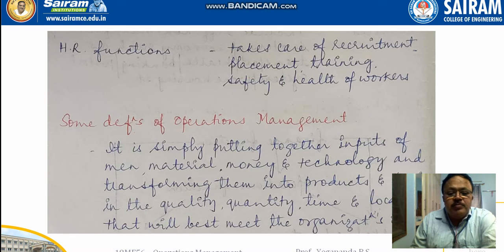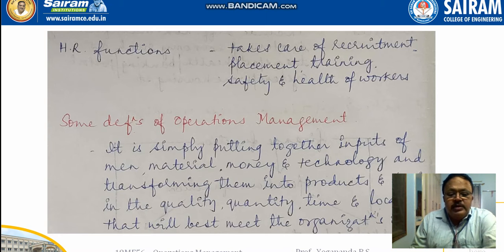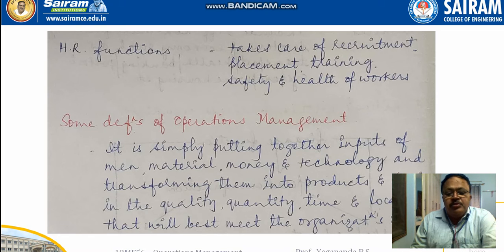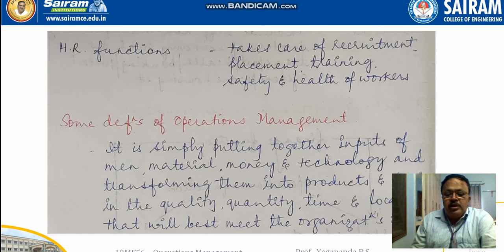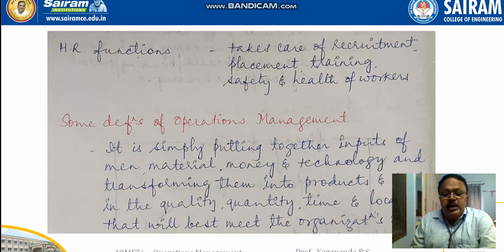Some definitions of operations management: it is simply putting together inputs — the four Ms, that is men, materials, money, and machines — and even technology, and transferring them into final products and services in terms of quality, quantity, time, and location that will best meet the organization's objective. The organization's goal is to maximize profit, and operations management is responsible for managing all these inputs.